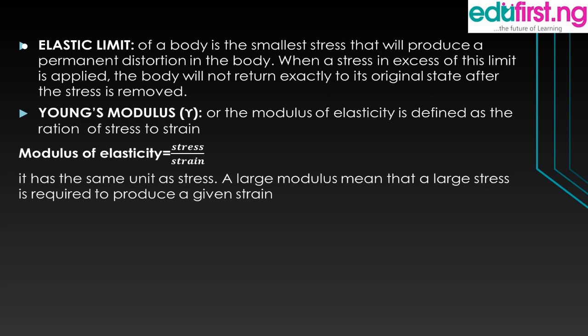We also have something called elastic limit. The elastic limit of a body is the smallest stress that will produce a permanent distortion in the body — it is the force applied to a body that will make the body permanently deformed. The situation whereby the body will not be able to return back to its original position is known as the elastic limit. Young's modulus is the ratio of stress to strain, and a large modulus means that a large stress is required to produce a given strain.